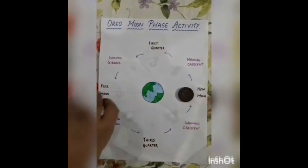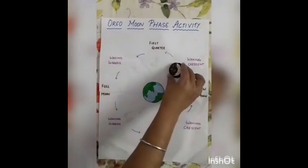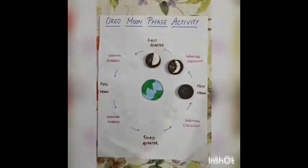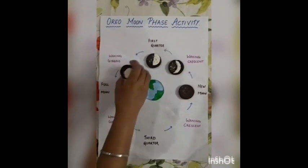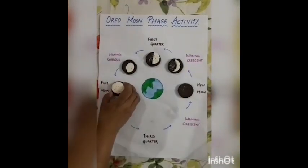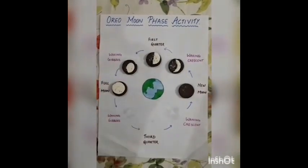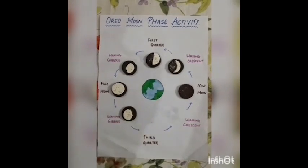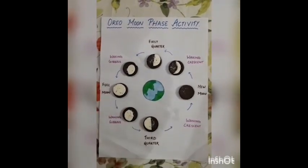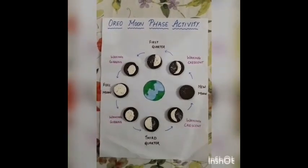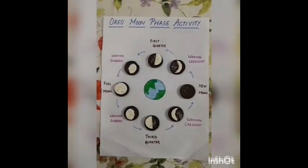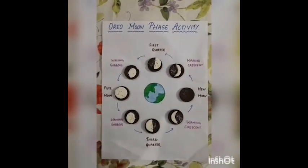So now, I am placing these different phases of moon according to their positions. You can see these phases of moon every day in the night sky. Now, these are placed according to the correct order.